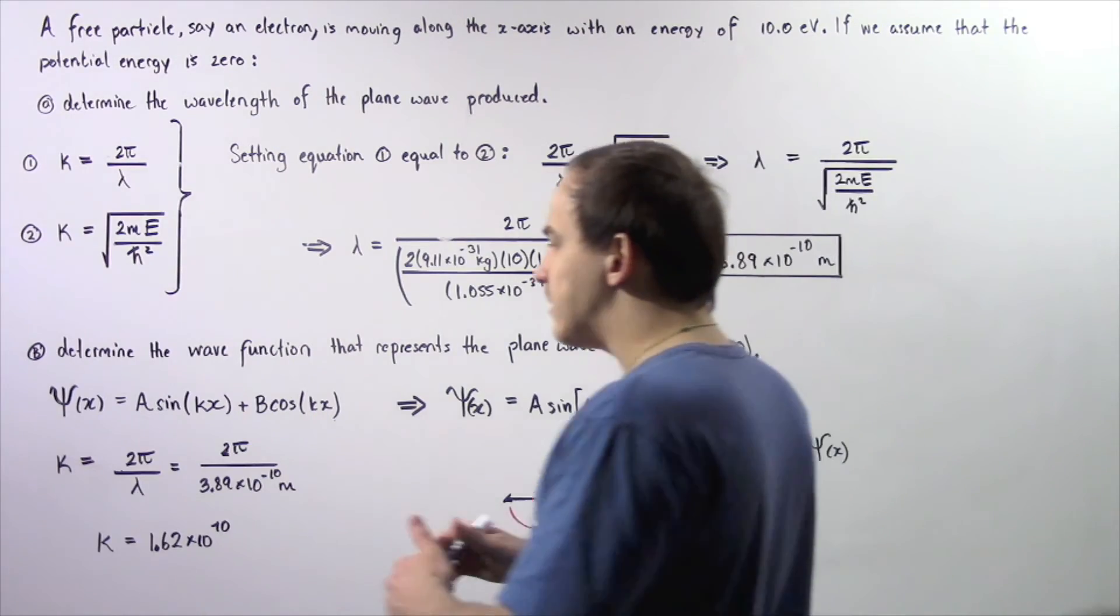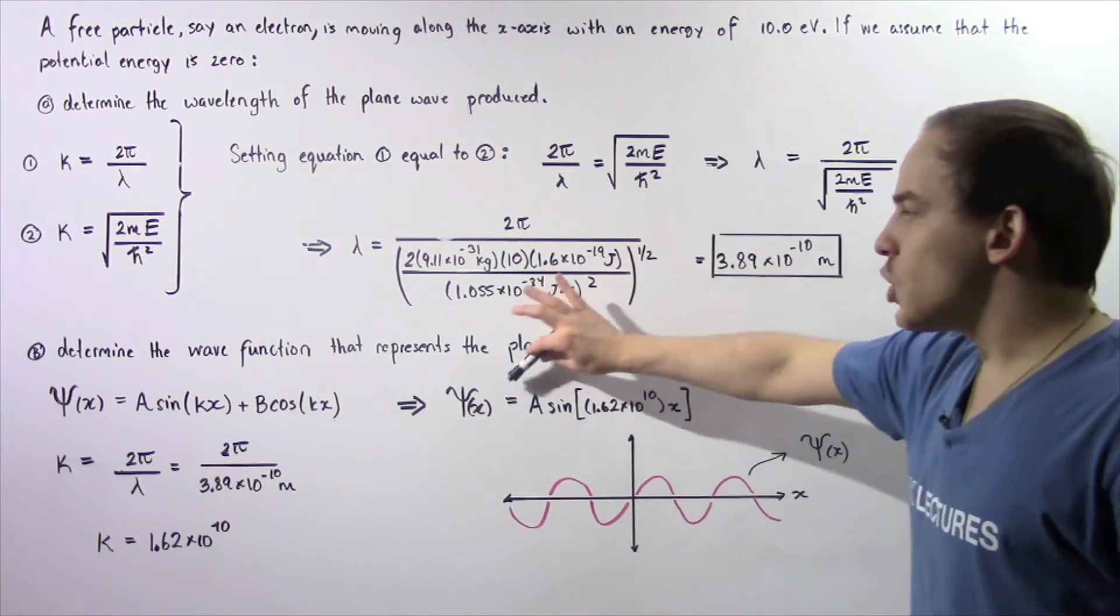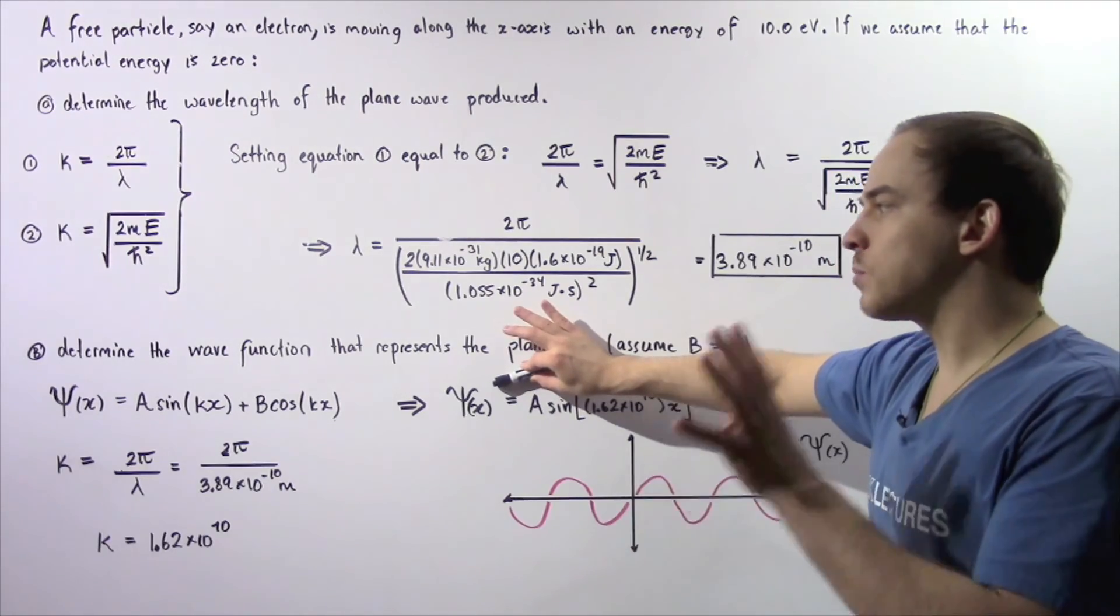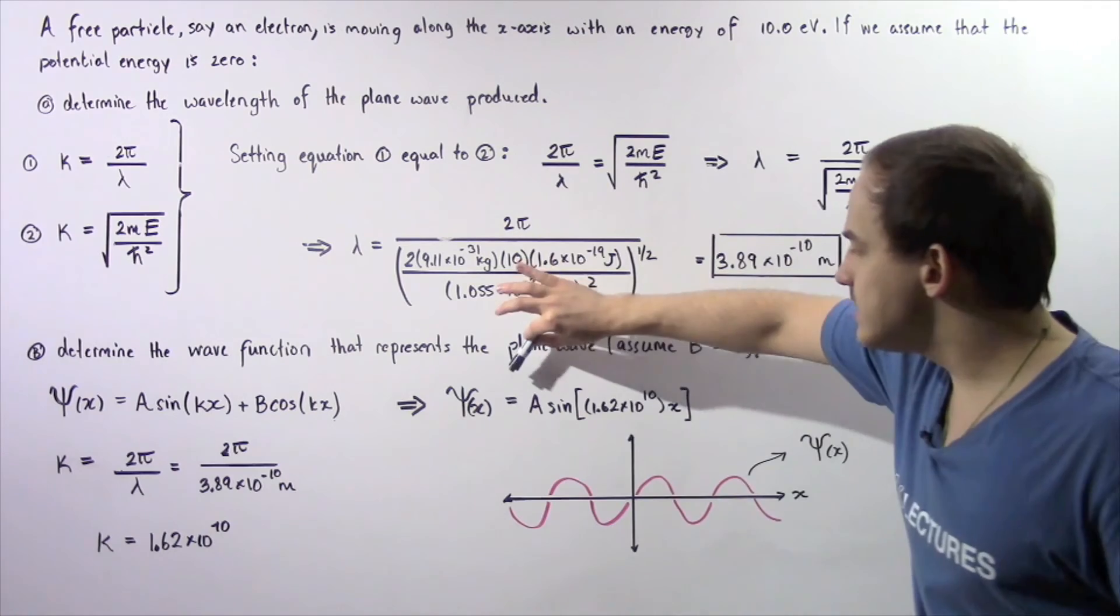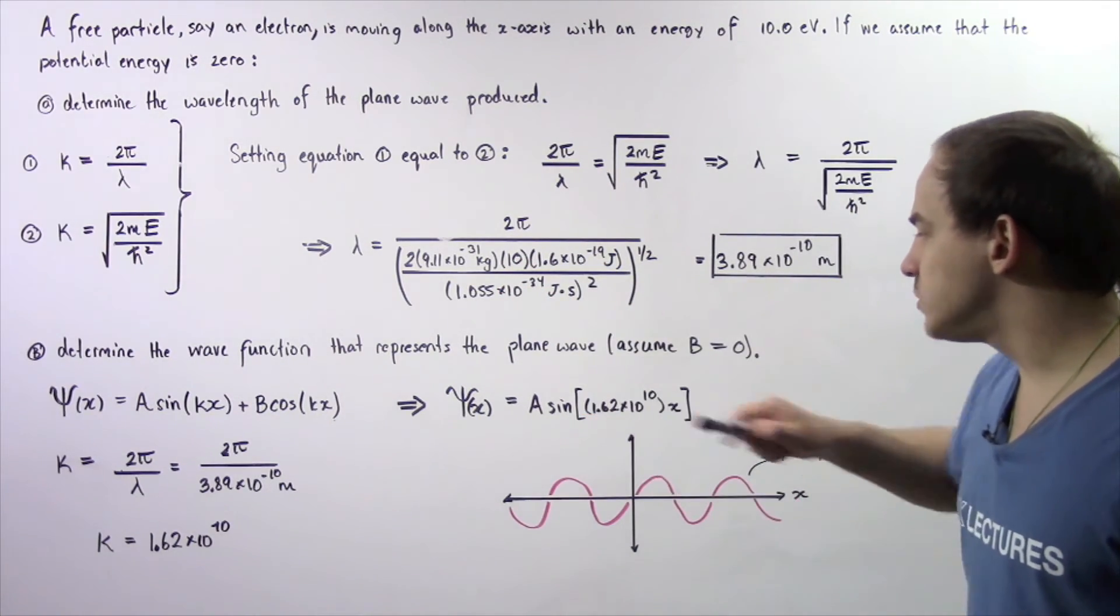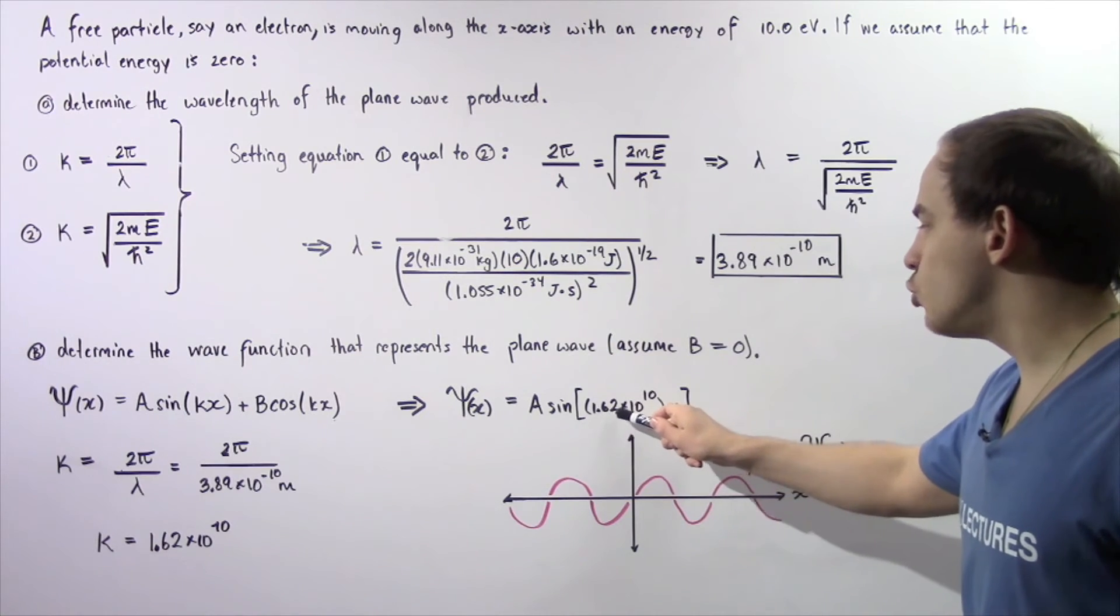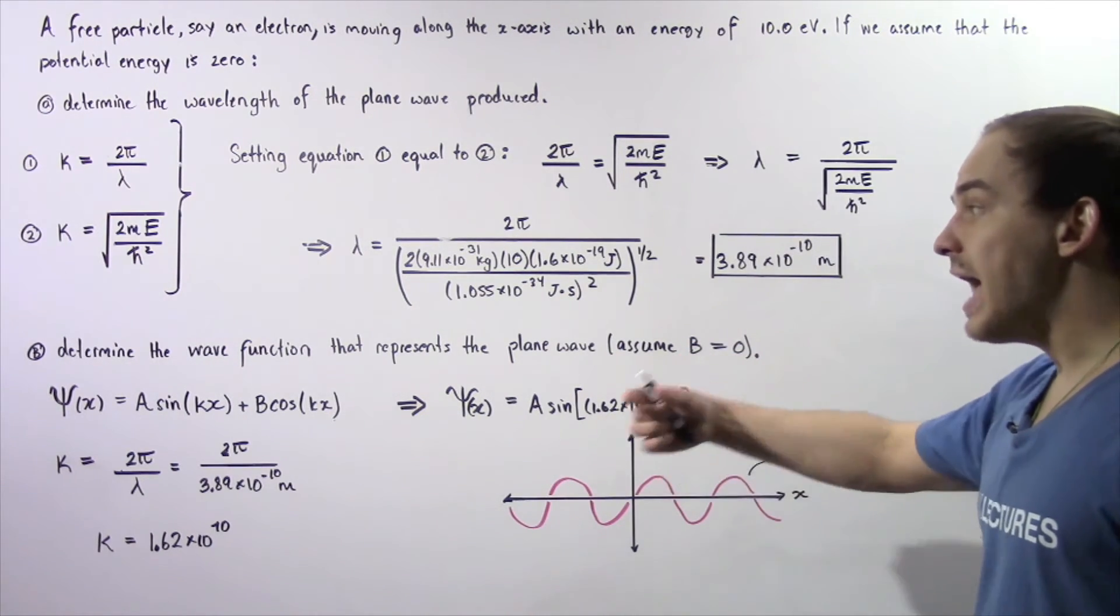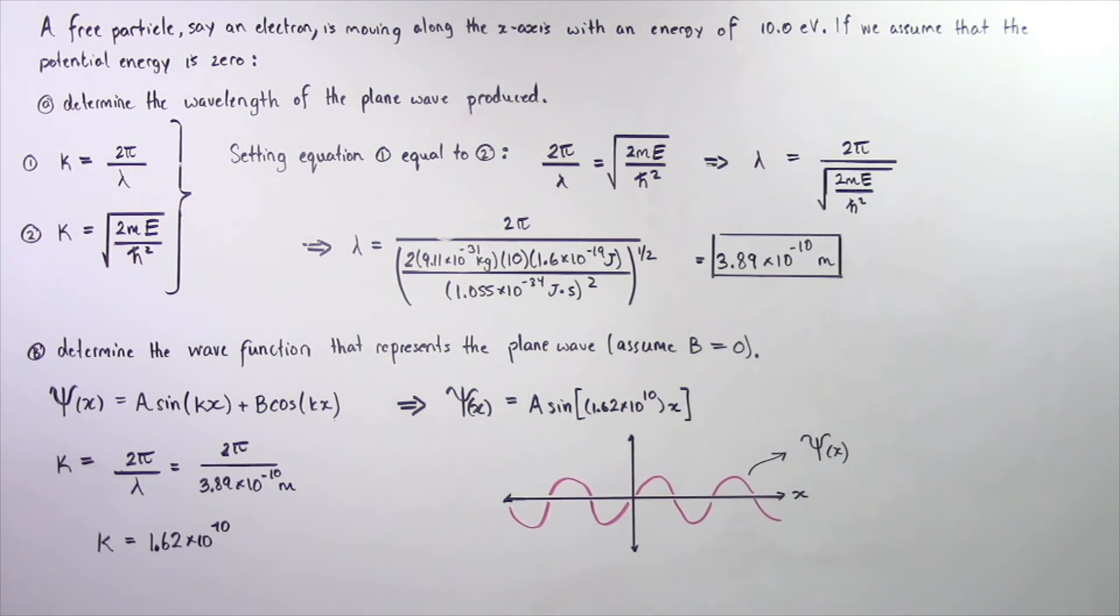So now we can take this equation and rewrite it in the following form. The equation that represents the wave function of the free particle is equal to A multiplied by sine of 1.62 times 10 to the 10 of x, where x is simply our position along the x-axis.